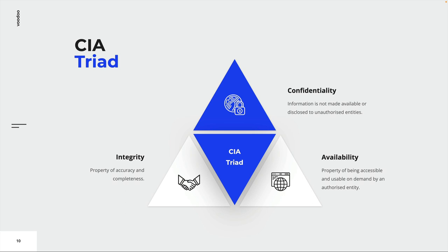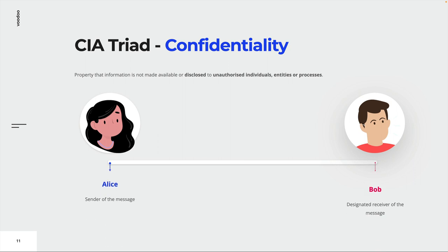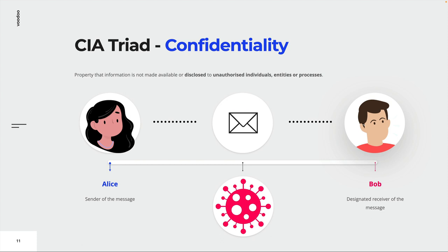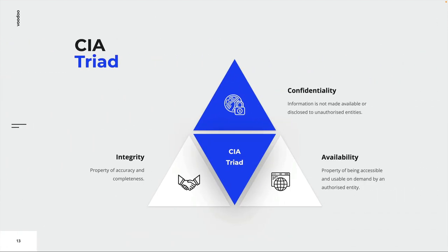Let's have a look at confidentiality first. Confidentiality is the property that information is not made available or disclosed to unauthorized individuals, entities, or processes. For example, Alice is about to send a message to Bob that contains confidential information — she does not want anyone other than Bob to read it. Now imagine a third person somehow gaining access to the message. If the attacker manages to do so, he is able to read the content of the message, and therefore the message is no longer confidential. This is what we call a violation of the confidentiality security objective, and it can have serious consequences depending on the nature and content of the message.